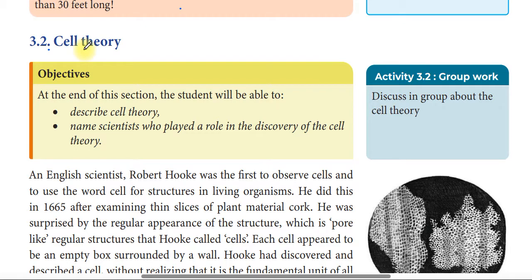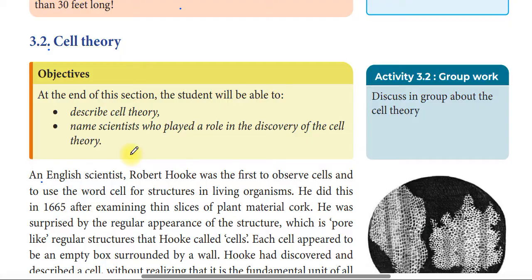An English scientist, Robert Hooke, was the first to observe the cell and to use the word 'cell' for structures in living organisms. Robert Hooke is an English scientist.